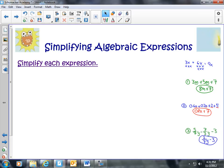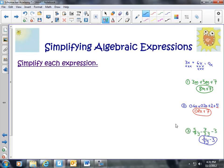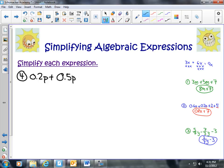Let's try a couple more. We'll try to make, sometimes you're going to have more than just two terms, like terms, in one expression. Like in this case, we're going to have 0.2p plus 0.5p minus 0.4p. So we want to find out how much p we have.